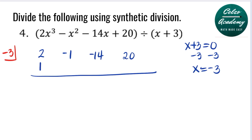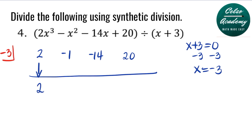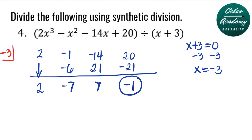First, bring down that 2. Then we multiply 2 times negative 3, that's negative 6. Adding negative 1 and negative 6, that's negative 7. Repeat the process: multiply negative 7 times negative 3, that's 21. Adding negative 14 and 21, that's positive 7. 7 times negative 3, that's negative 21. 20 plus negative 21, that's negative 1. So the remainder here is negative 1.